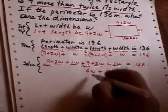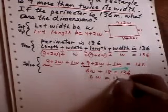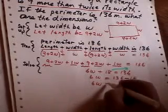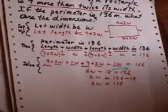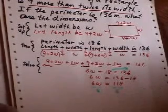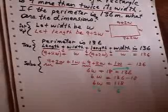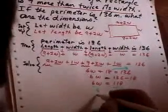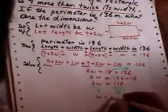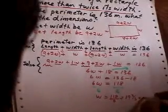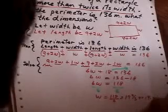And remember when it crosses the border, it becomes a subtract. And that leaves me with six W equals 118. And now I'm going to divide both sides by six. Both sides by six. And 118 divided by six is 19 and two thirds.